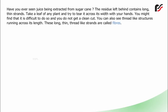Have you ever seen juice being extracted from sugarcane? The residue left behind contains long, thin strands. Take a leaf of any plant and try to tear it across its width with your hands. You might find that it is difficult to do so, and you do not get a clean cut. You can also see thread-like structures running across its length. These long, thin, thread-like strands are called fibers.